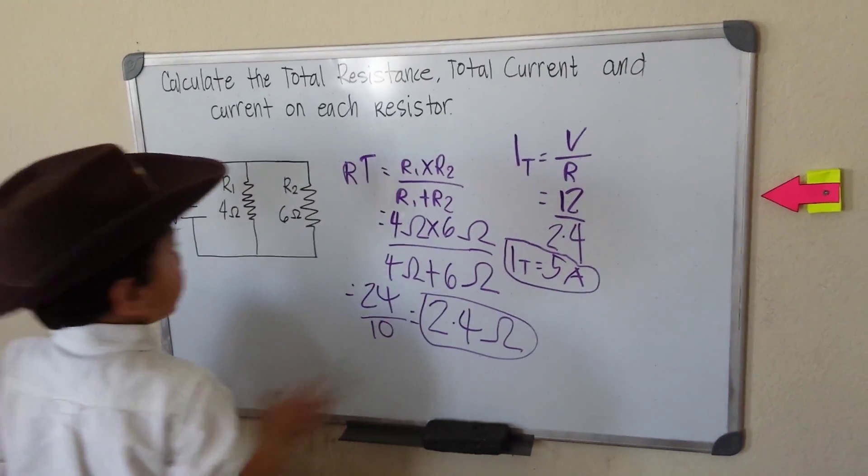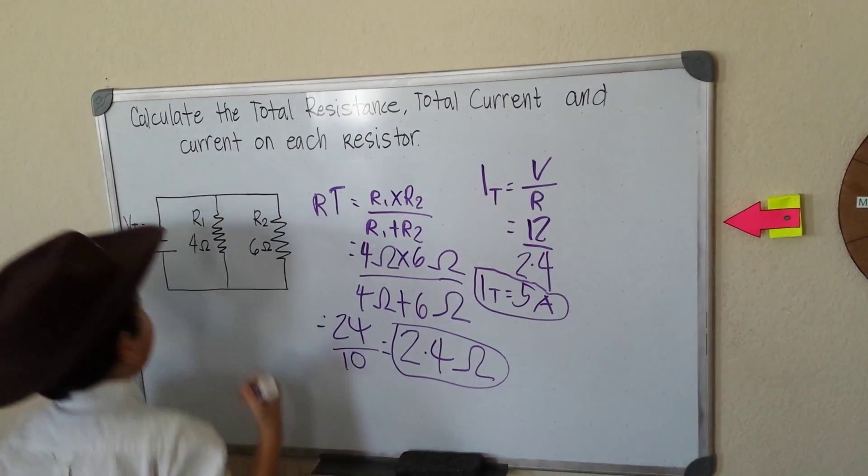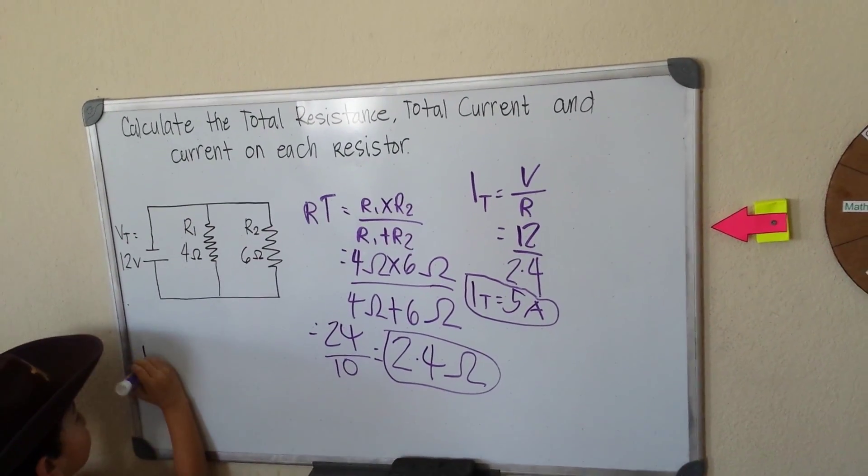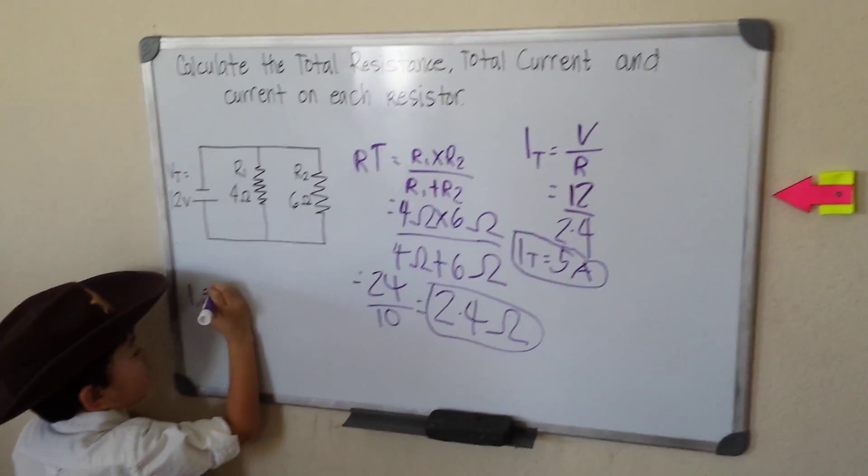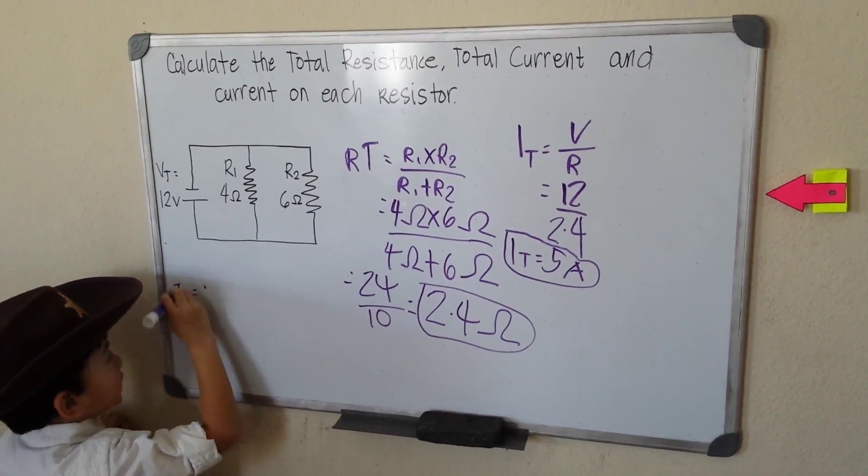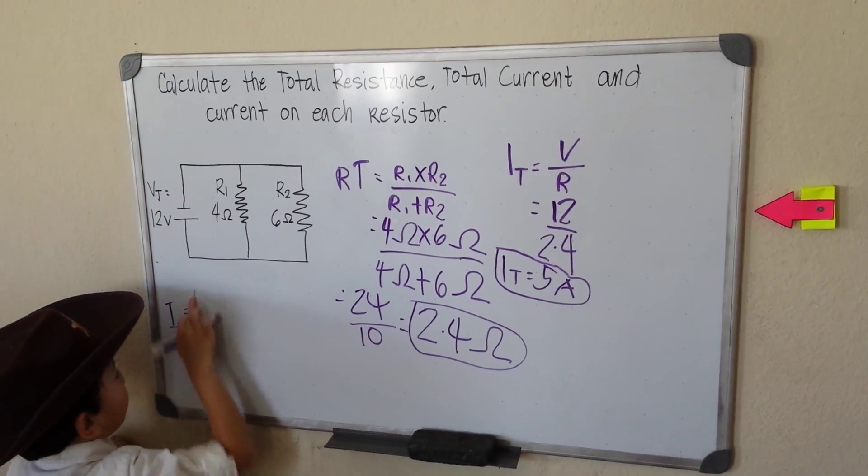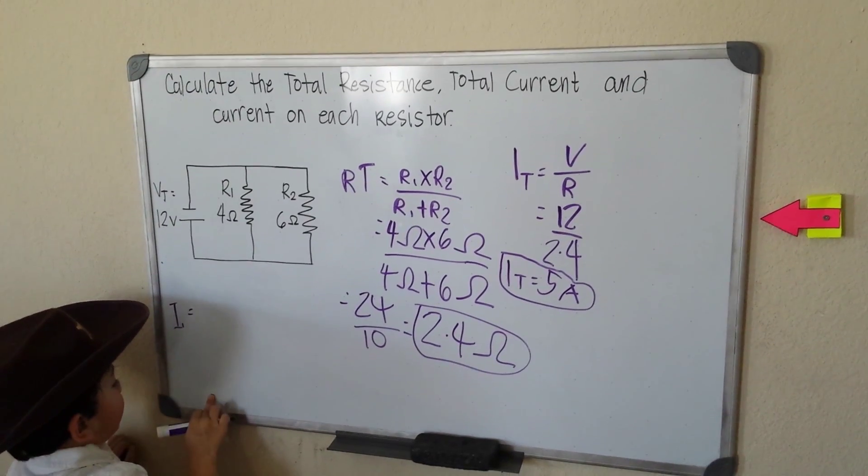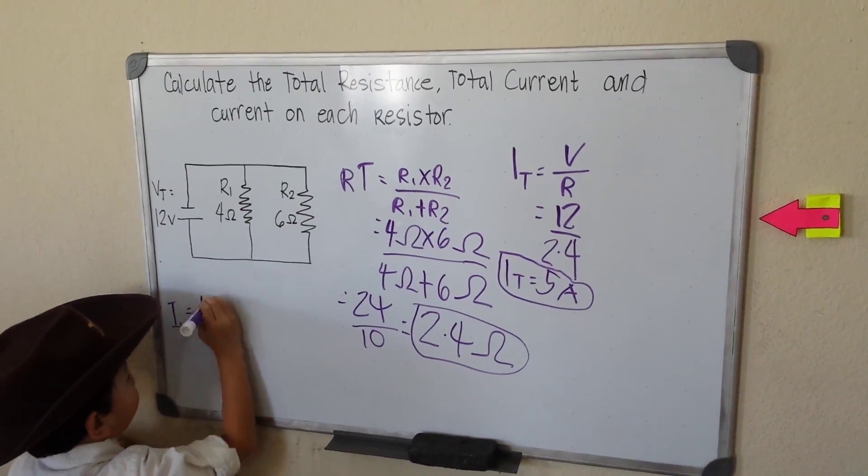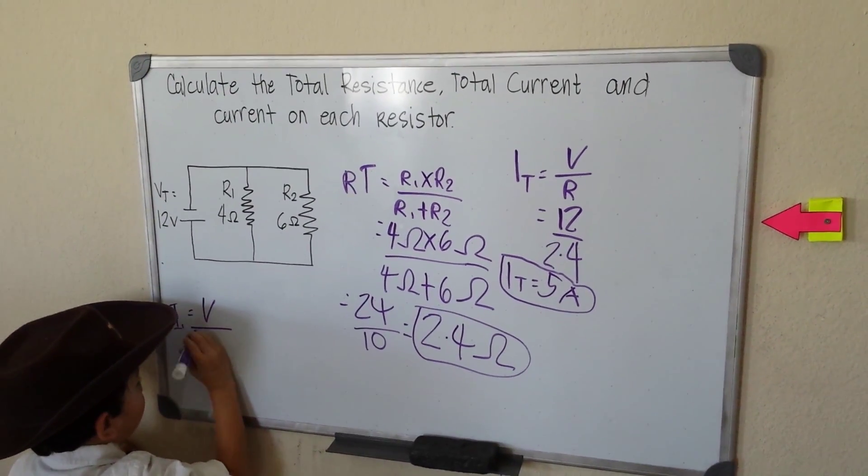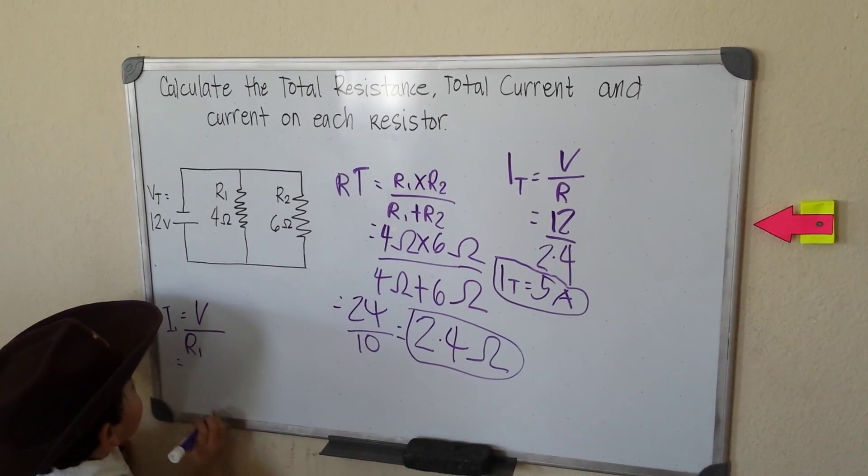Now we can do the I1 and the I2. I1 equals current 1, that will be, our current 1 is, let me think. That will be voltage over this resistor, this is the 1.